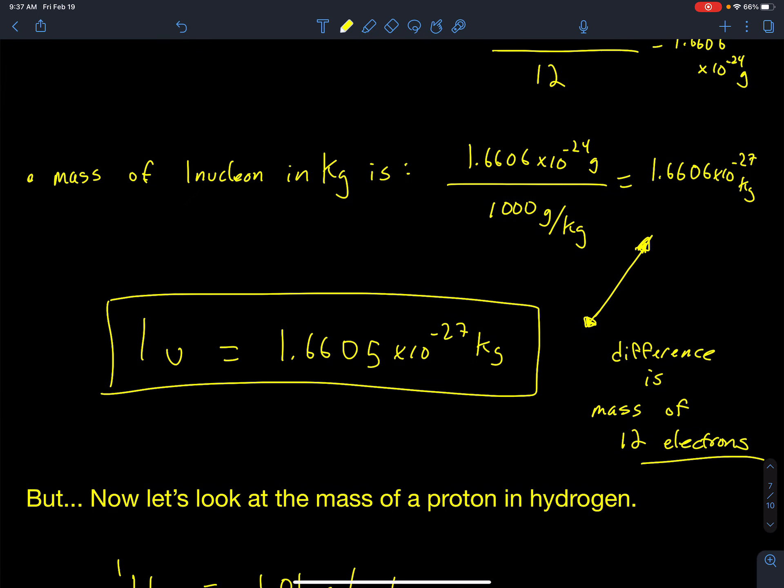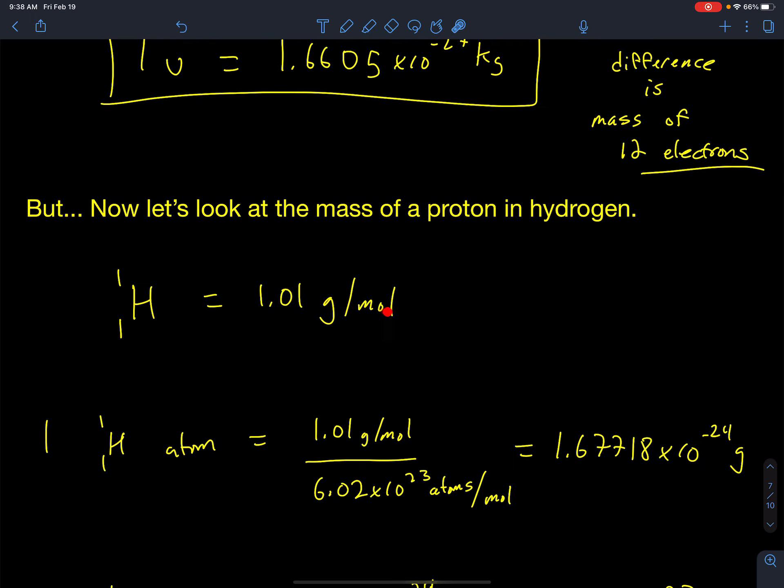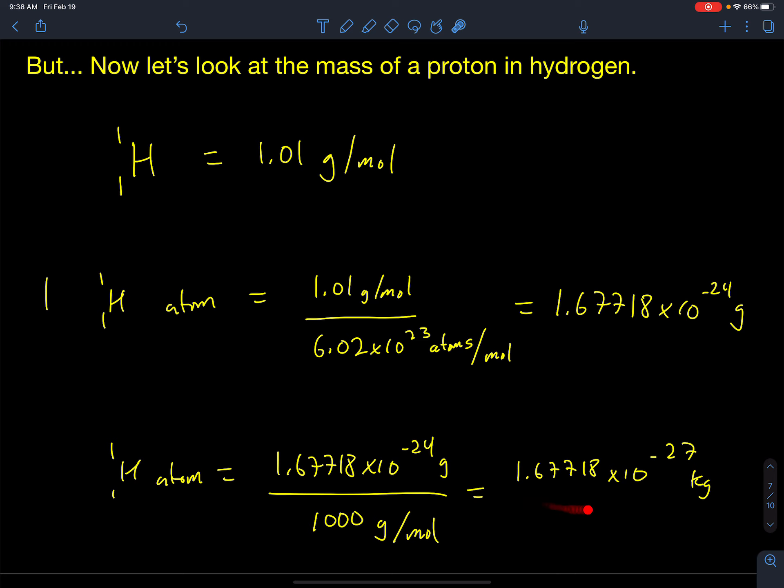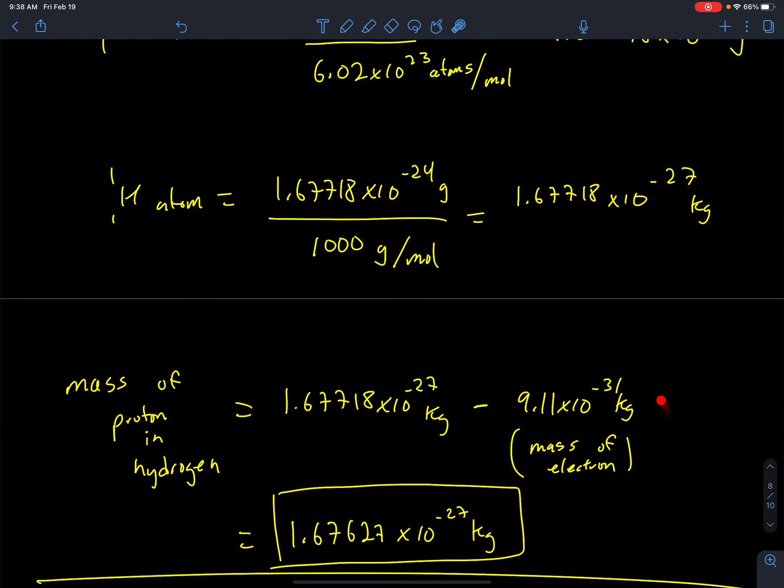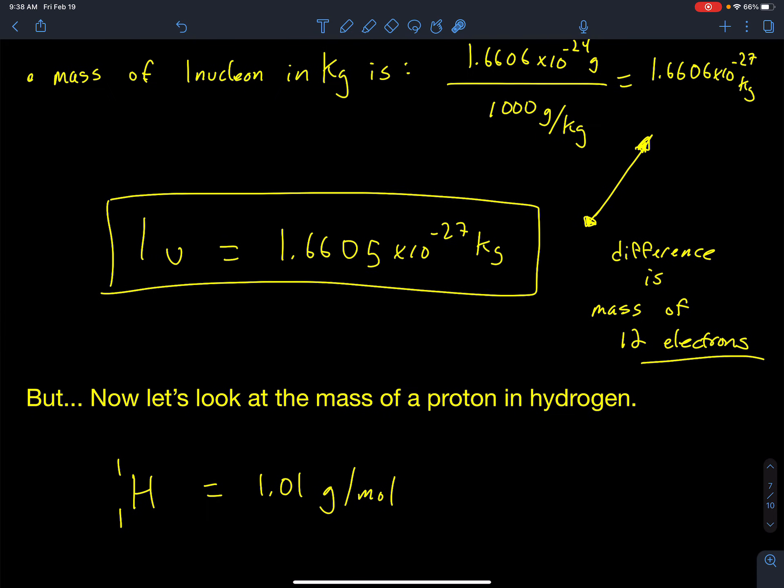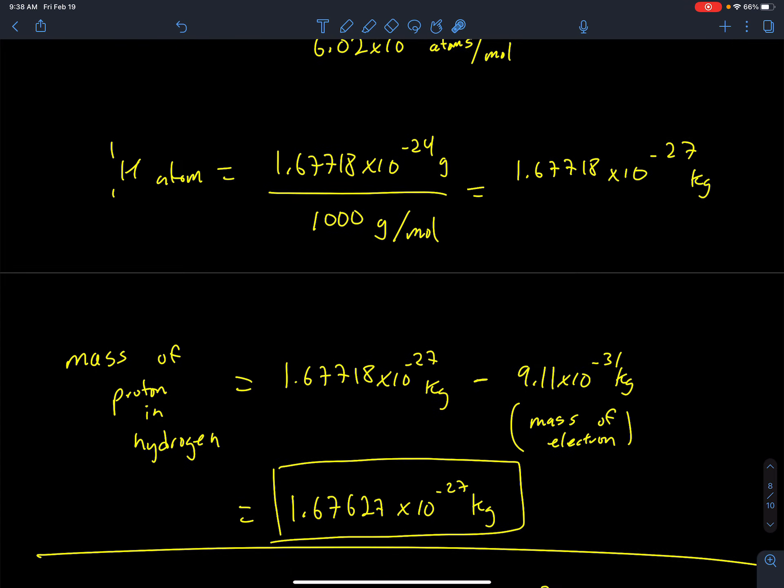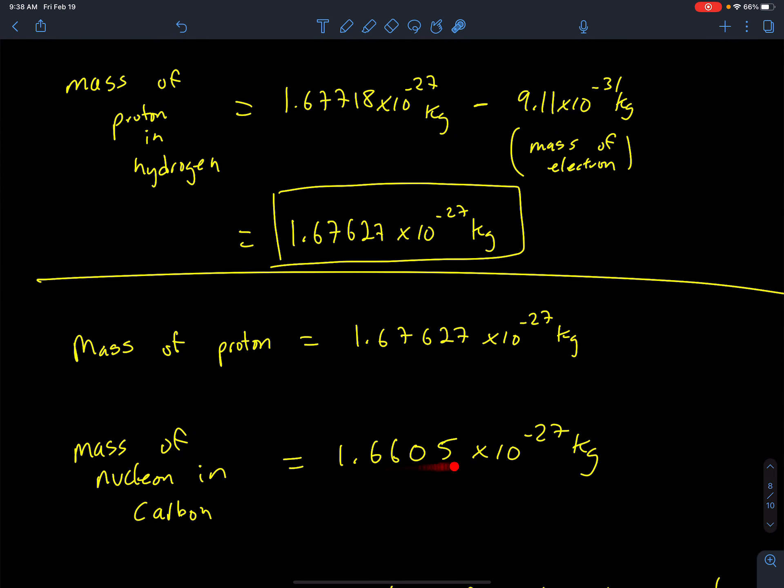But then if you just go over to hydrogen, hydrogen is just made of a proton. So theoretically, if I did the same thing with hydrogen and I found out what the mass of the proton and hydrogen would be. So here I go, 1.01 grams per mole divided by Avogadro's number gives me that. And then if I divide that by 1,000 and then I subtract the mass of an electron, I get this number. So if I look at hydrogen, hydrogen says that the mass of a nucleon or the mass of a proton is 1.67627 times 10 to the negative 27 kilograms. But our calculation with carbon said it's 1.6605 times 10 to the negative 27. Something's weird. How did it change? So the mass of a proton is that, but the mass of a nucleon is that. That got people thinking. Where did that extra little bit of mass go?